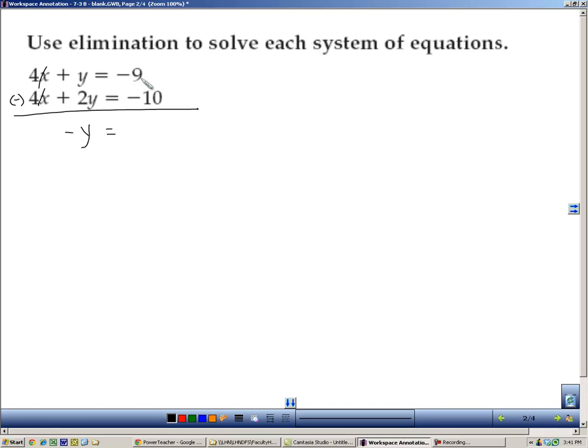Now be careful here, negative 9 minus negative 10, I'm going to write that over here so you see it. Remember, minus a negative, you have to add the opposite inverse, it's really negative 9 plus 10, so that's going to be a 1. Dividing both sides by negative 1, and you get y equaling negative 1.